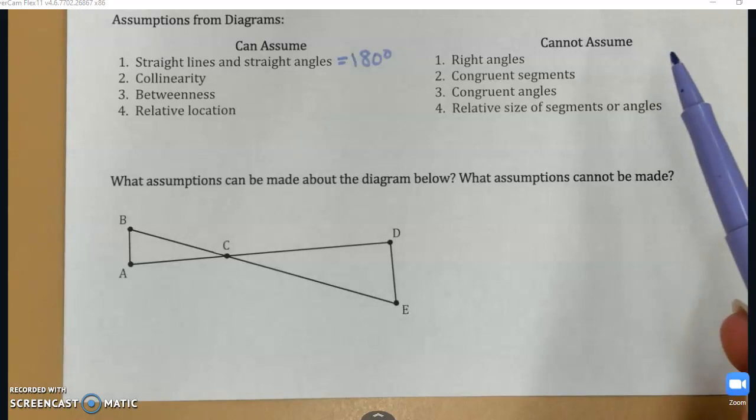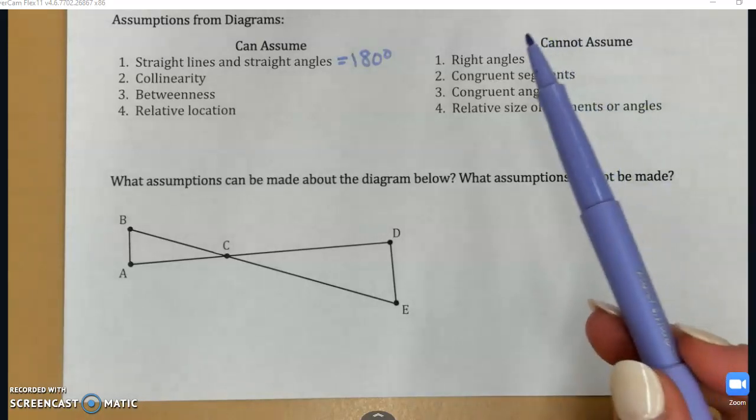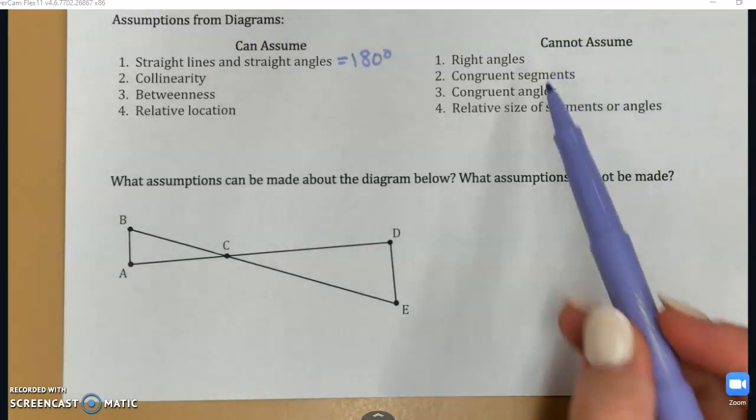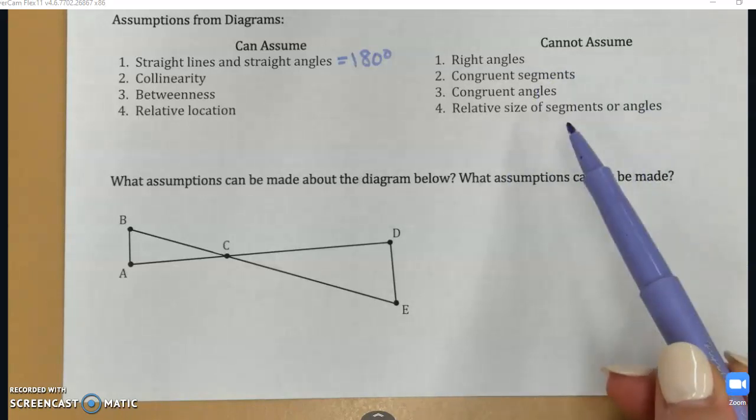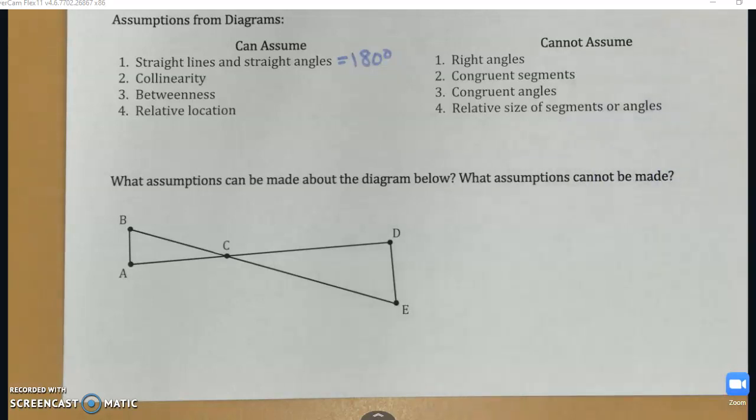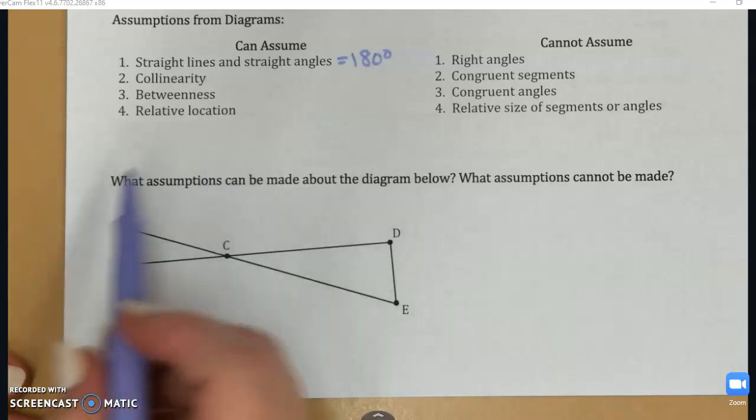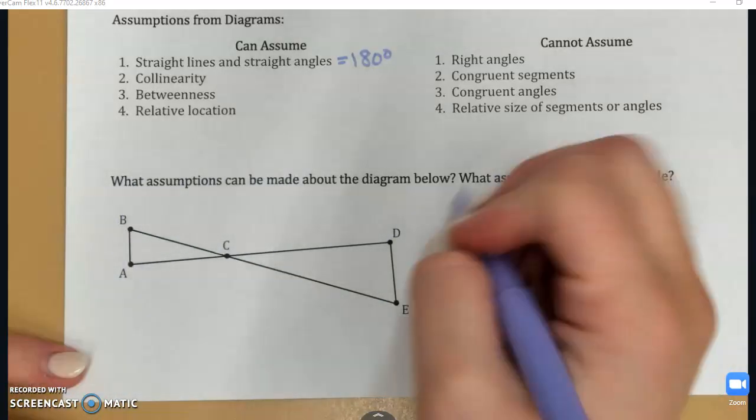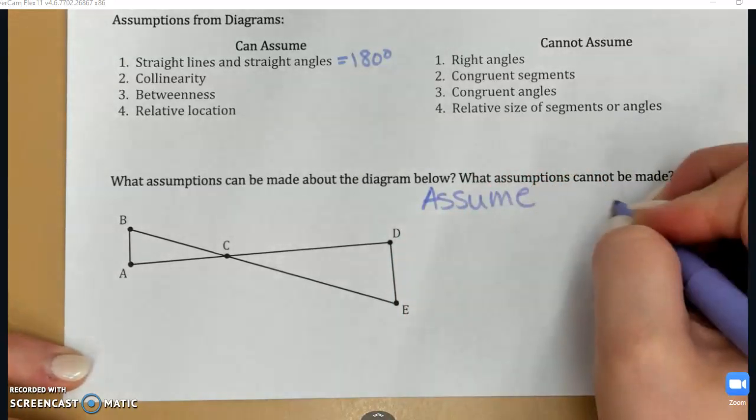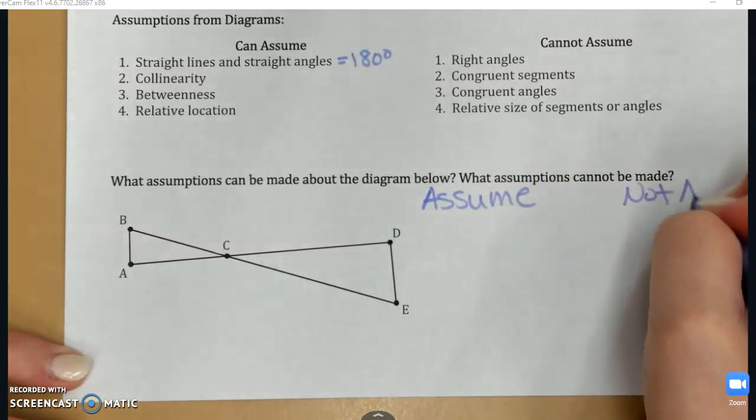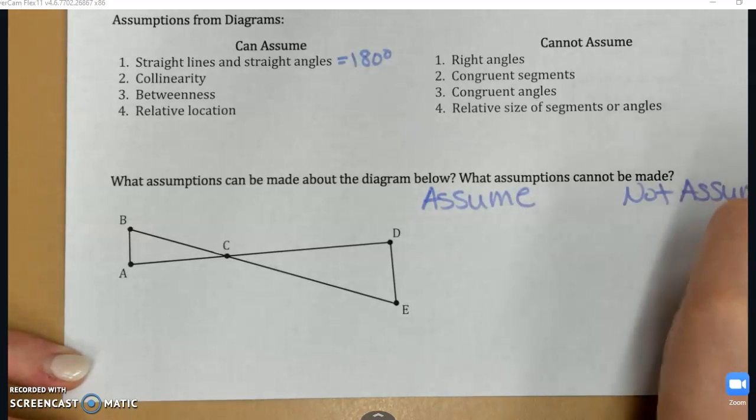Things you cannot assume, even if it looks like it's true, are right angles, congruent segments or angles, or relative size. So that would be like one segment or angle looks bigger than the other. Even if it looks that way on the diagram, that's not something we can assume. So looking at this picture we're given below, let's make a list of things that we are safe to assume, and things that even though they might look true, we cannot assume those things.